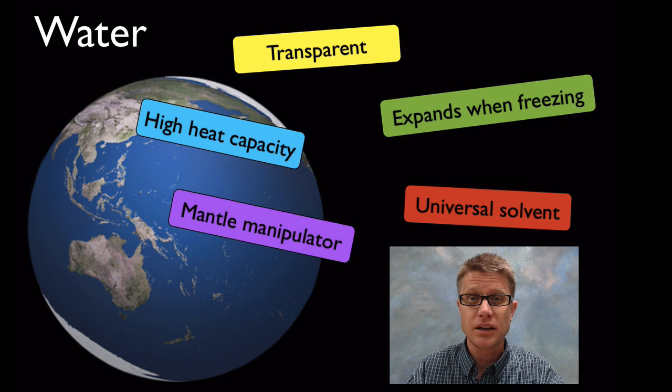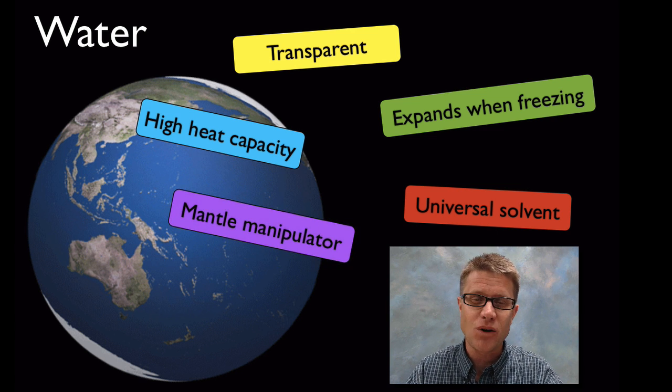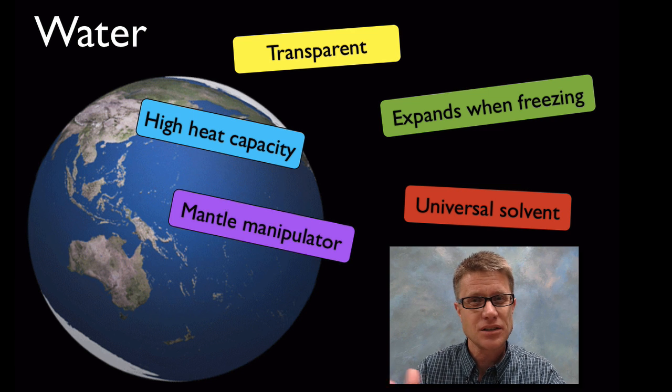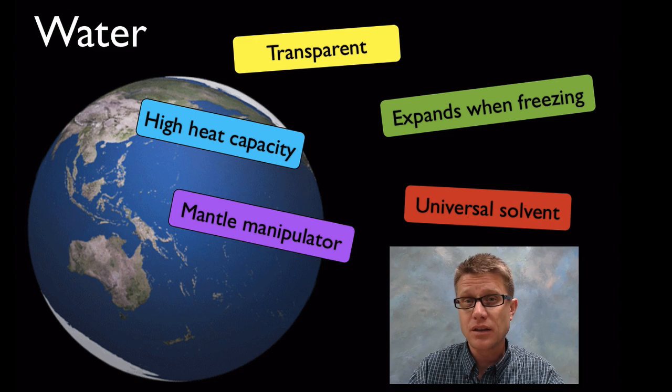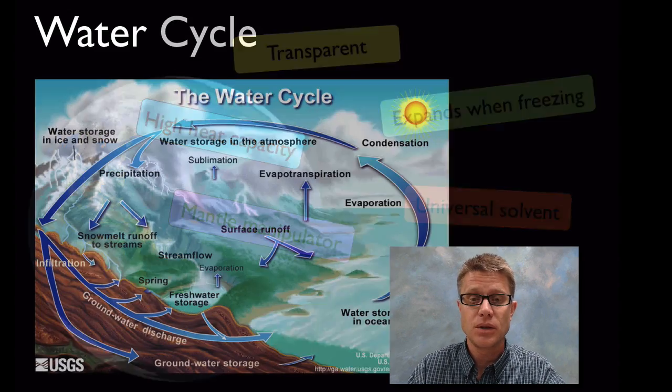And then it's a mantle manipulator. What does that mean? The mantle, as water moves into it, the water actually changes the viscosity. How easily it flows. And the melting point as well. And so it does a lot on the interior of the earth that we can't see.